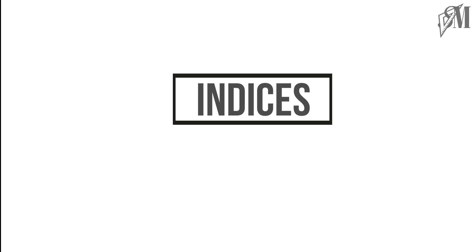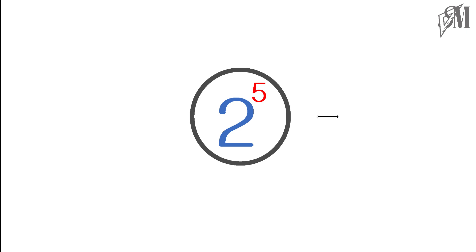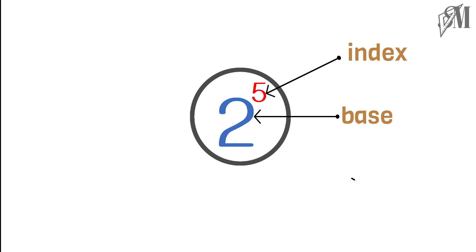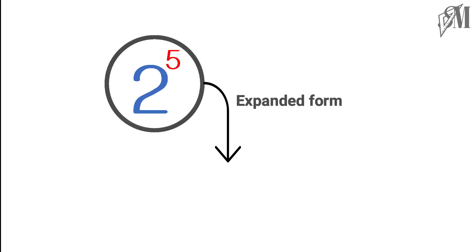Hi everyone, welcome to Smart Math Online Tutor. Let us look into indices through this video. Numbers written in index notation are called indices. Here you see 2 to the power of 5 — the 2 is the base and 5 is the index; the whole thing together is called the power. 2 to the power of 5 can be written in expanded form as 2 × 2 × 2 × 2 × 2.